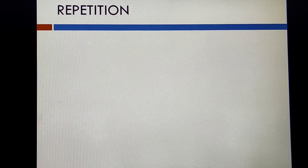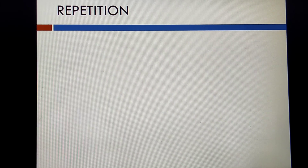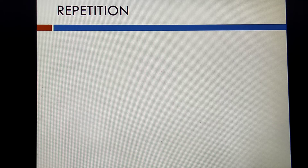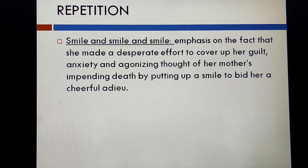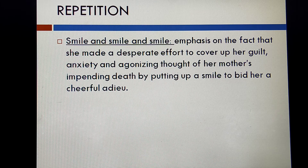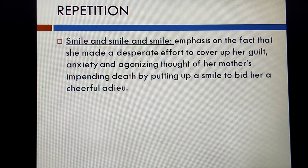Moving to the next is repetition — a rhetorical device used when a word or phrase is repeated in a piece of literature. For example, 'smile and smile and smile.' This emphasizes the fact that she made a desperate effort to cover up her guilt, anxiety, and agonizing thought of her mother's impending death by putting up a smile to bid her a cheerful goodbye.